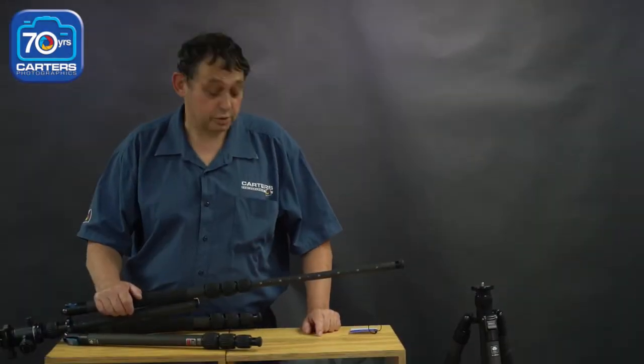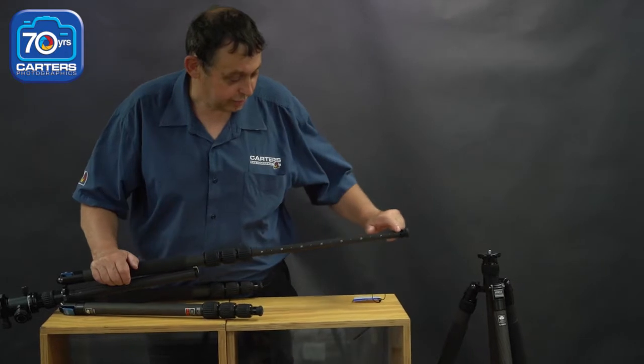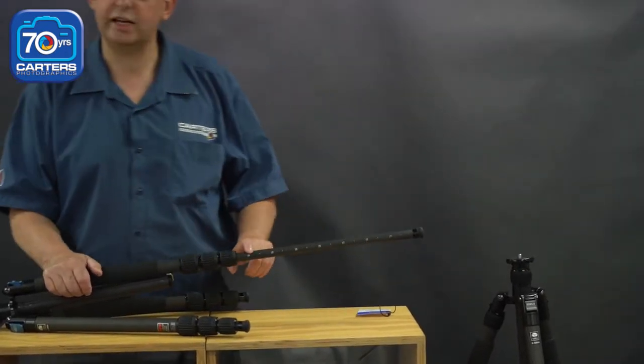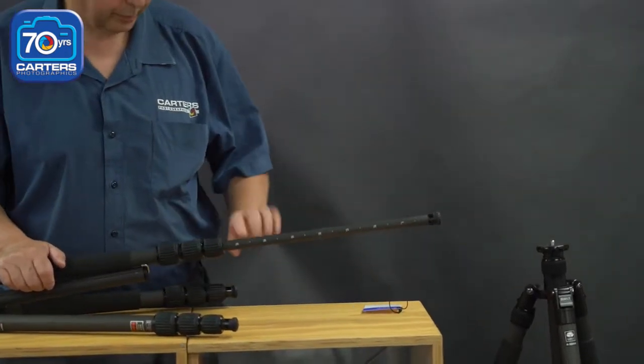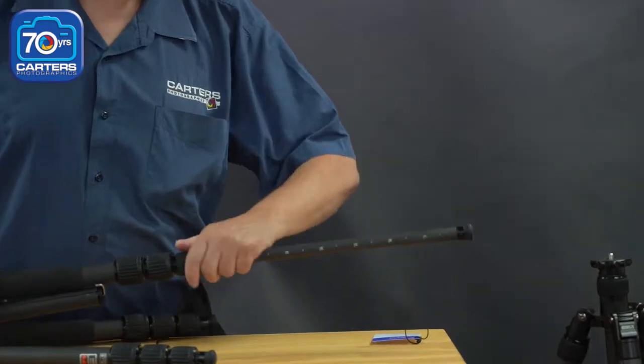One of the great features of Siri tripods is there's a measuring stick on the side here. Very handy for getting exact, so you get all the legs exactly the same. Another little handy feature that they have.